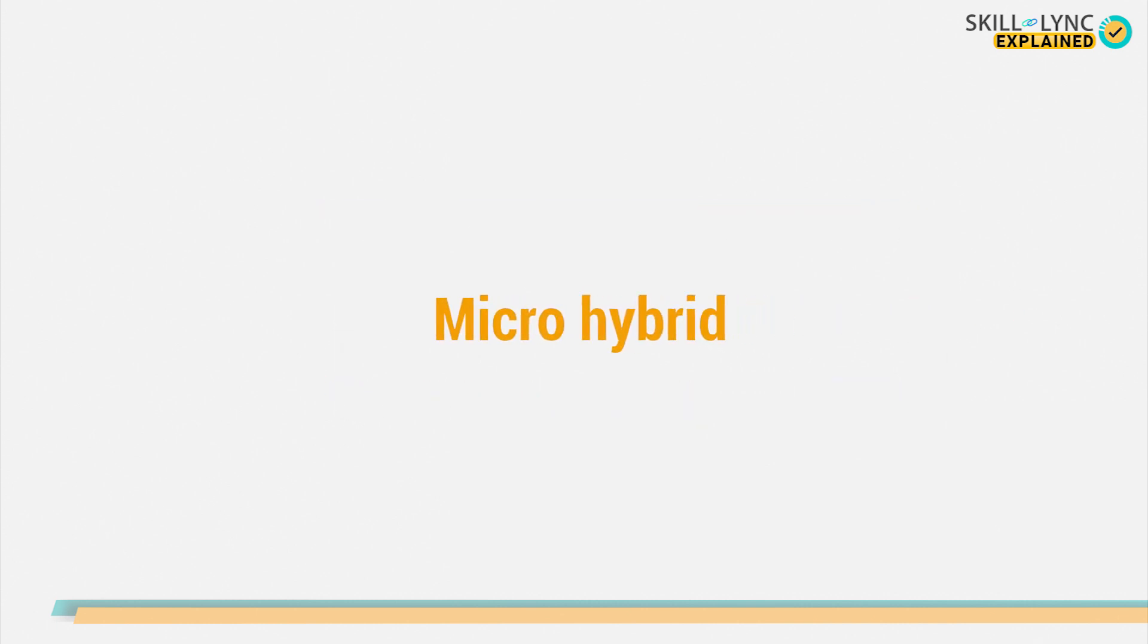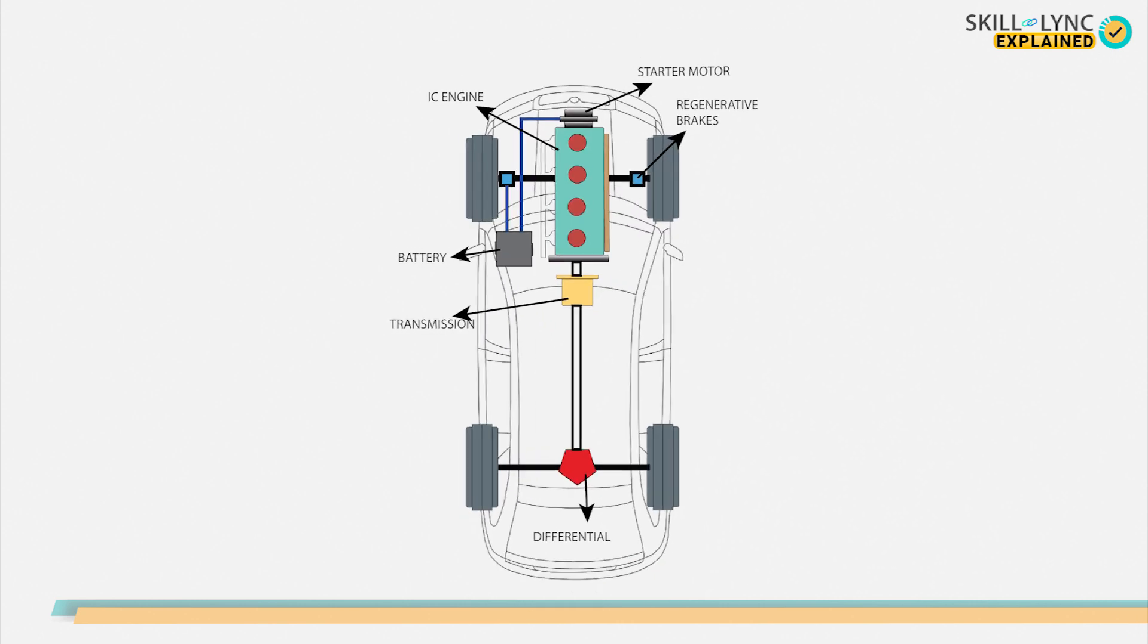The last classification is called the micro hybrid. Micro hybrid is the most basic type of HEV. It has the functionality of the start-stop system. In this, regenerative brakes are integrated into the vehicle. When the vehicle brakes, the regenerative system converts the kinetic energy of the vehicle into electrical energy and is used to charge the car's battery.